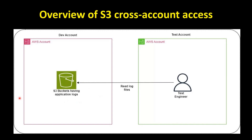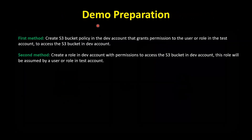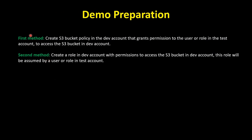So let us see how we can do this. In the demo, I will show you two methods. The first method will be using S3 bucket policy. We will configure the S3 bucket policy in the dev account that grants permission to the user or role in the test account to access the S3 bucket in the dev account. And in the second method, we will create a role in the dev account with permissions to access the S3 bucket, and this role will be assumed by a user or role in the test account. So these are the two methods which we will show in this demo.